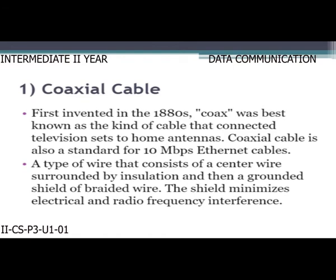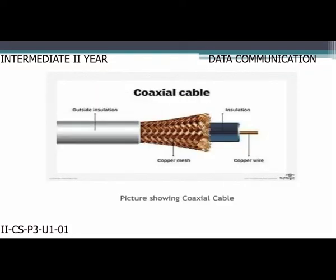First, coaxial cable: first invented in the 1880s, coax was best known as the cable that connected television sets to home antennas. It is also a standard for 10 Mbps Ethernet cables. It consists of a center wire surrounded by insulation and then a grounded shield of braided wire. The shield minimizes electrical and radio frequency interference.